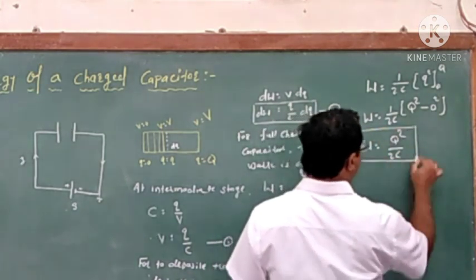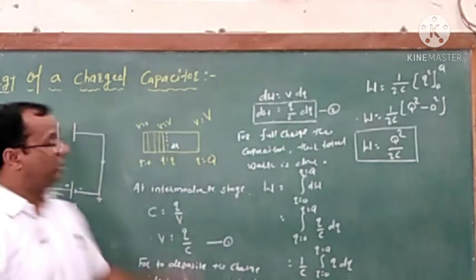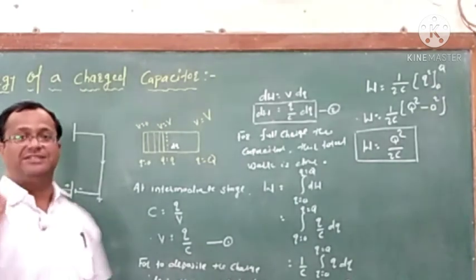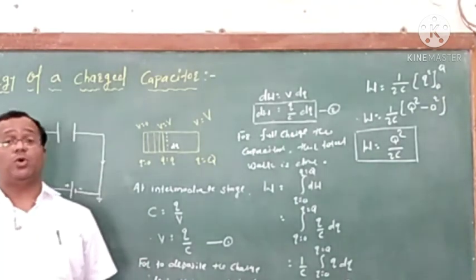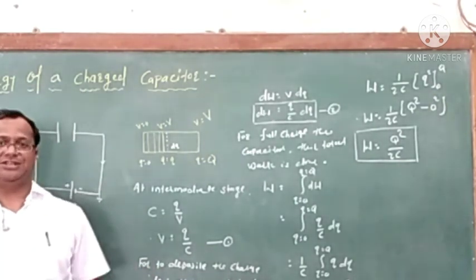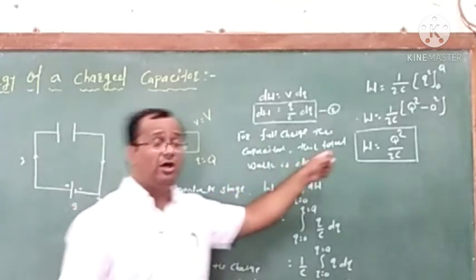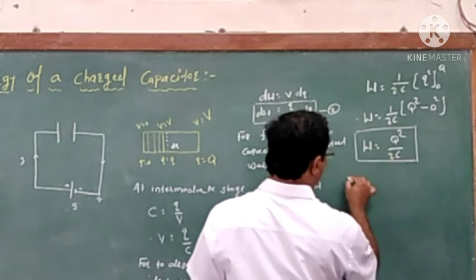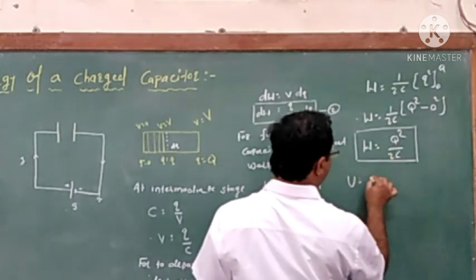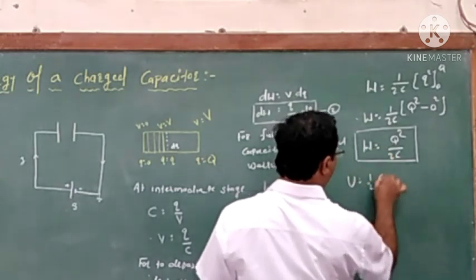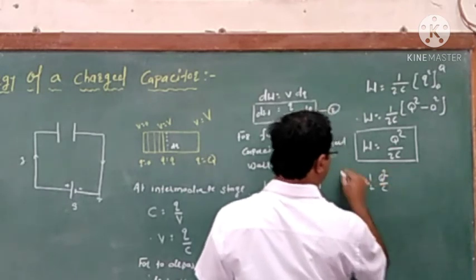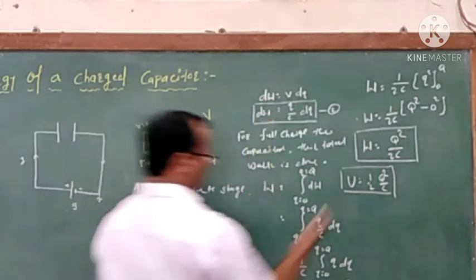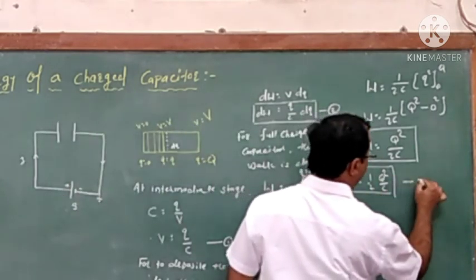This energy is stored inside the capacitor in the form of potential energy, and this same energy is also called electrical energy. This is one form of the energy of the charged capacitor. So we have energy U equals half of Q squared upon C. This will be equation number 1.